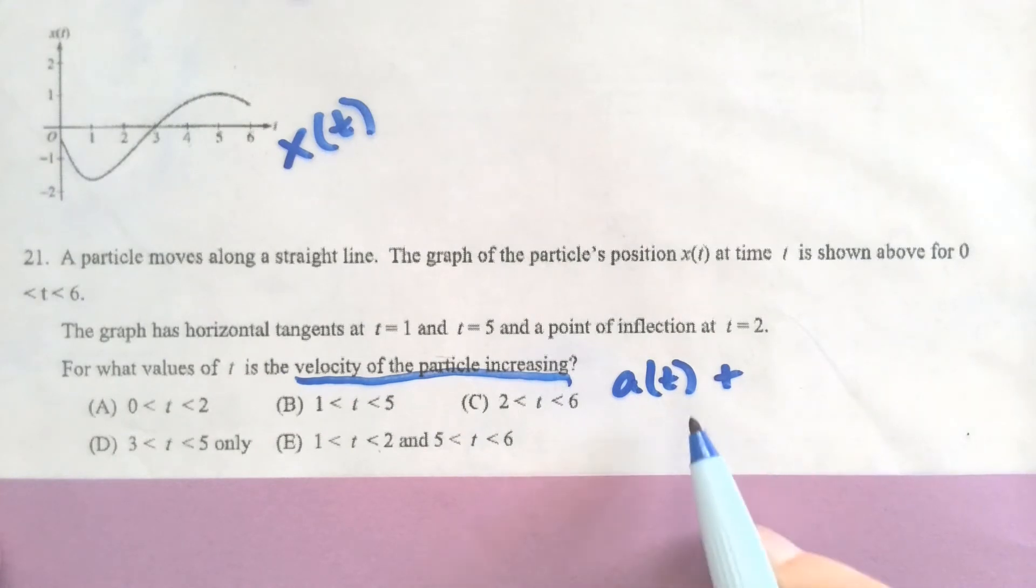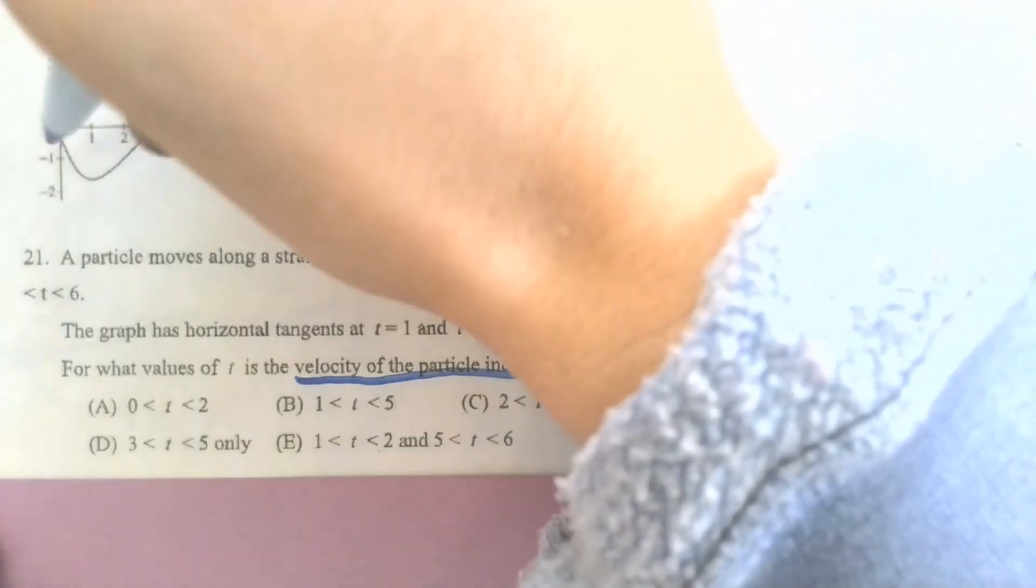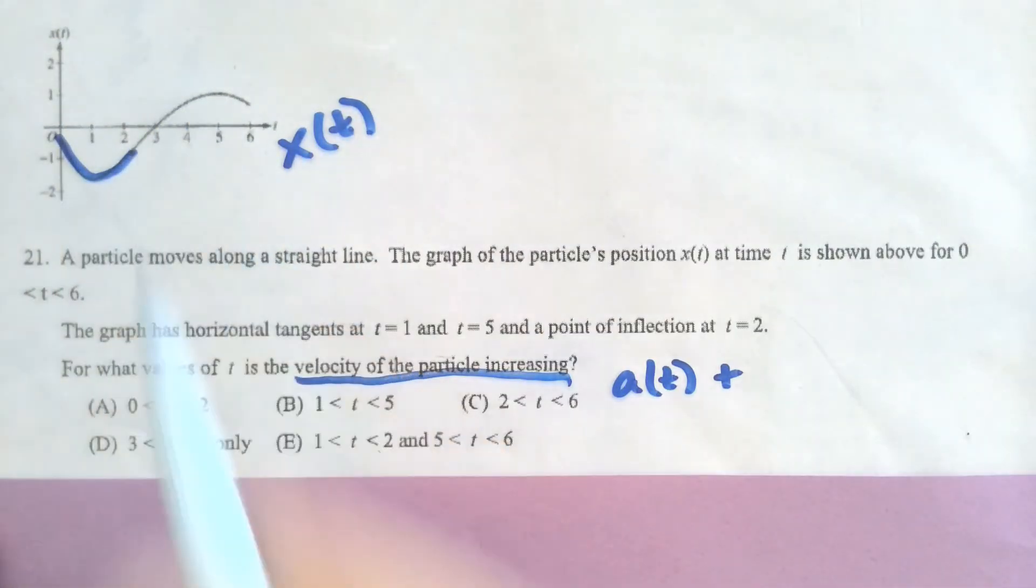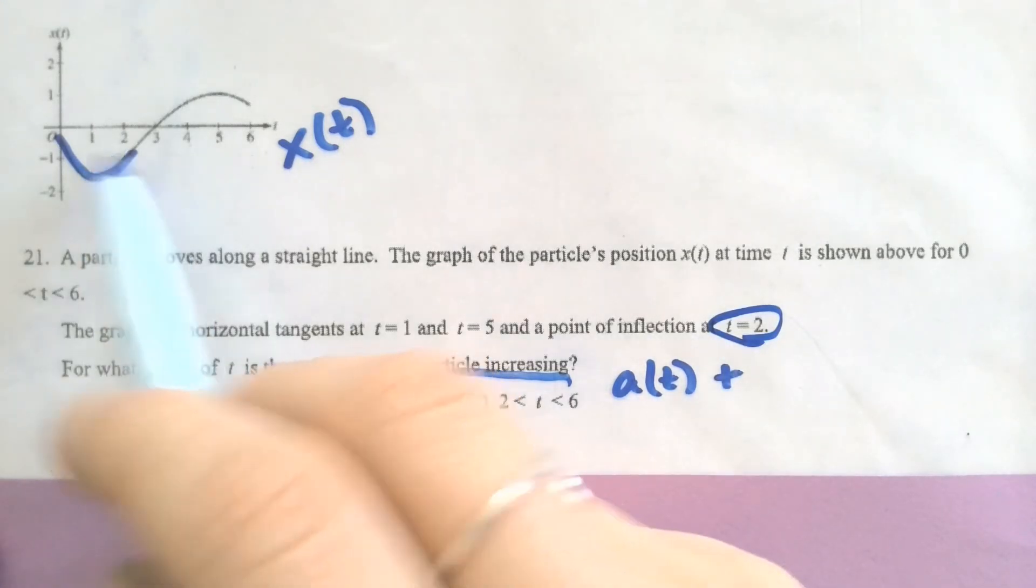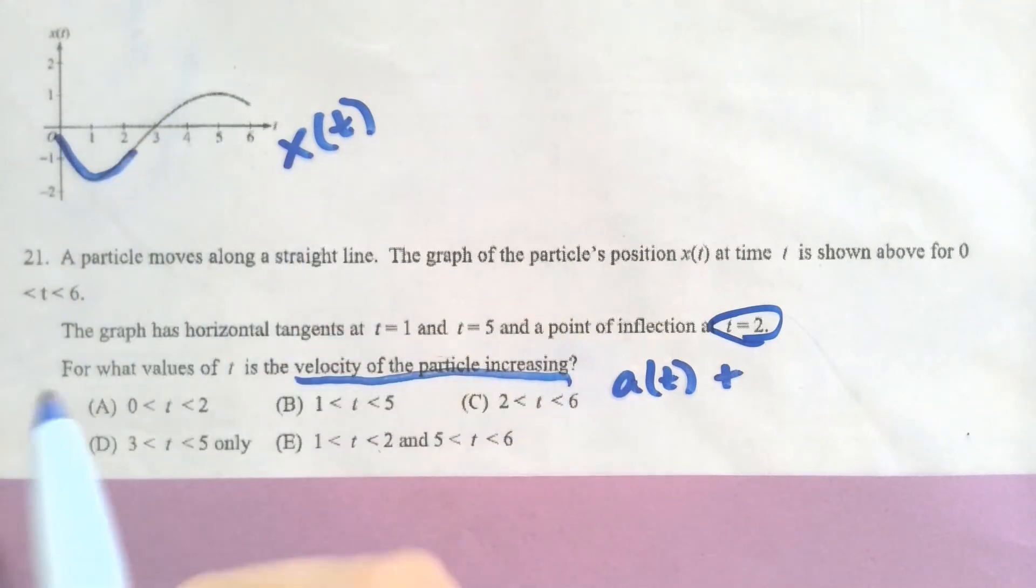So for the acceleration to be positive, that's a second derivative, so that means on my original graph of position, I should be concave up. So I'm looking at this piece right here, and to know exactly where this ends, I'm looking back into my problem to see that it has a point of inflection at t equals 2. So that's what tells me it goes from being concave up to concave down at 2, so that means my acceleration being positive is from 0 to 2.